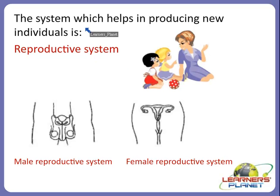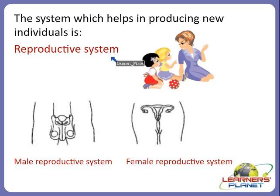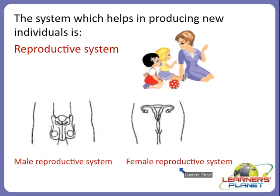The reproductive system helps in producing new individuals. As you can see here, this is the male reproductive system and this is the female reproductive system. It is a very important organ system of our body. So we have seen almost all the organ systems of our body, and now let us move on to discuss the main topic in detail.